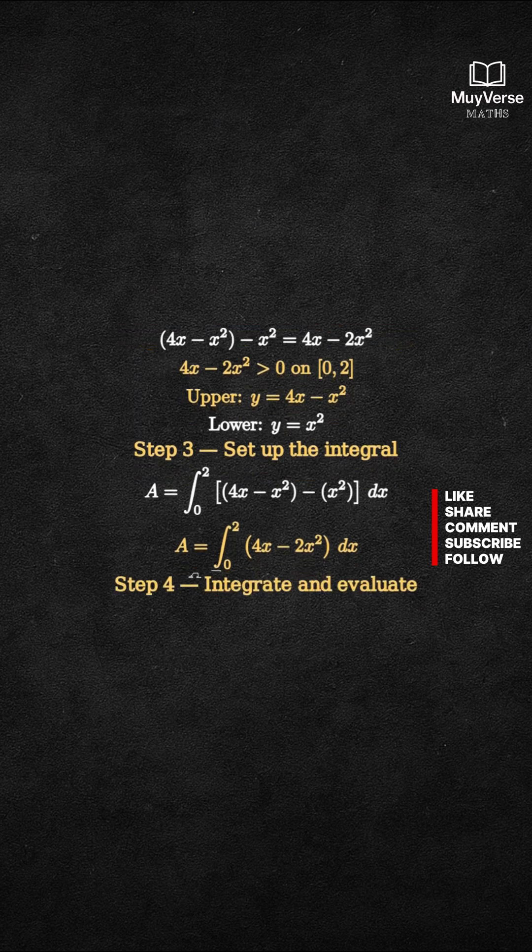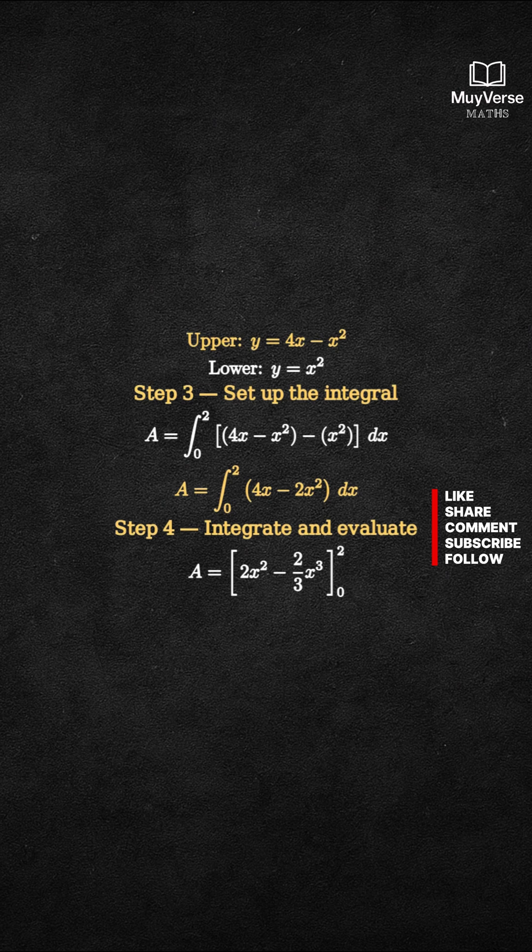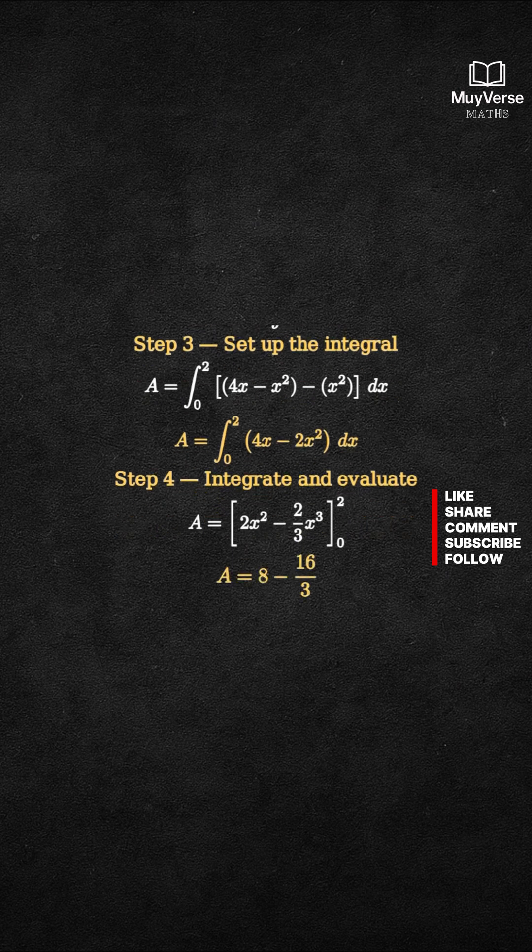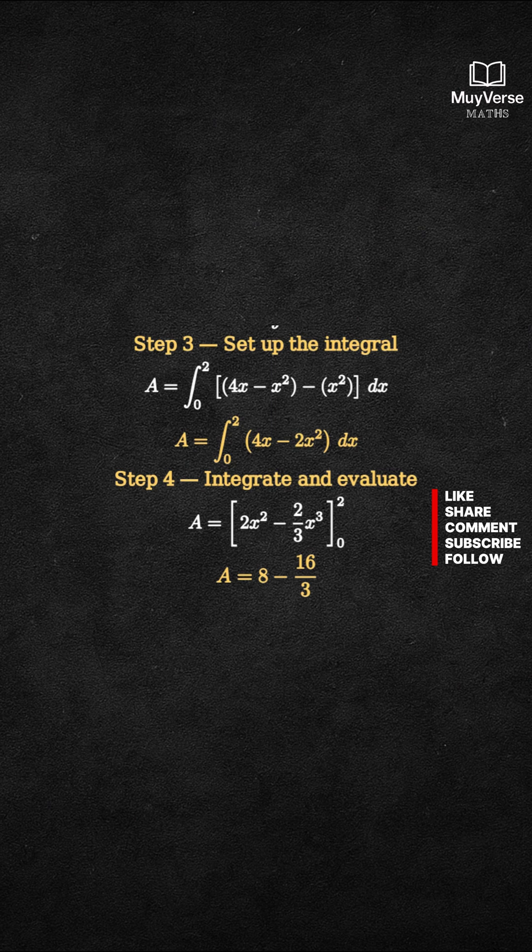Step 4, integrate and evaluate. An antiderivative is 2x squared minus 2 thirds x cubed. Evaluating from 0 to 2 gives 8 minus 16 over 3. Therefore, the area equals 8 over 3 square units.